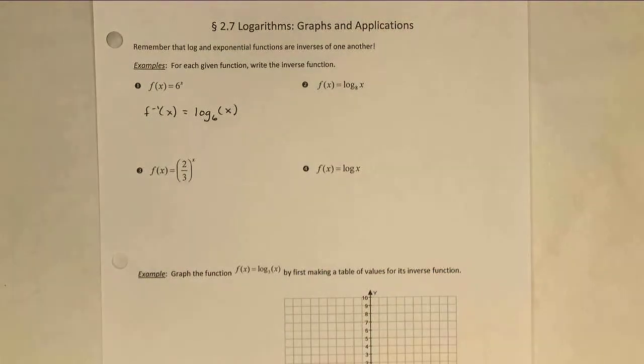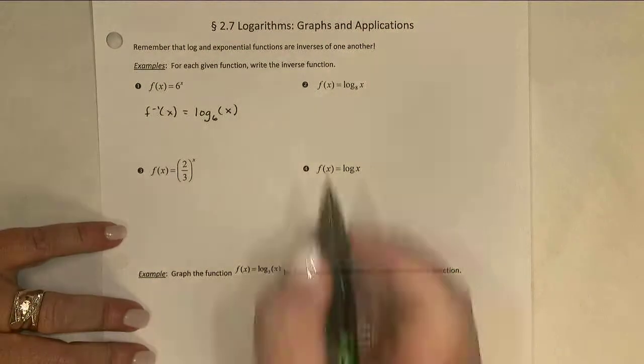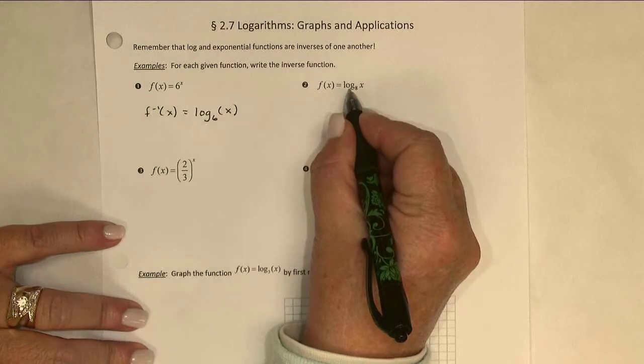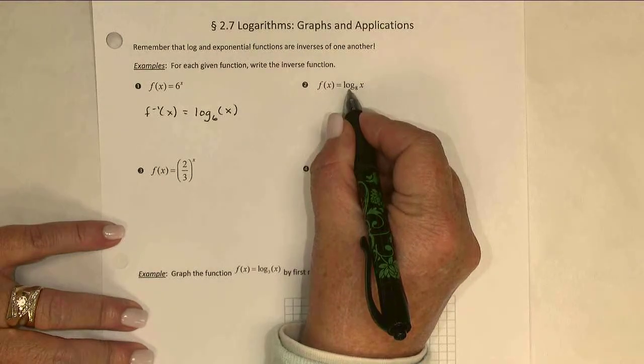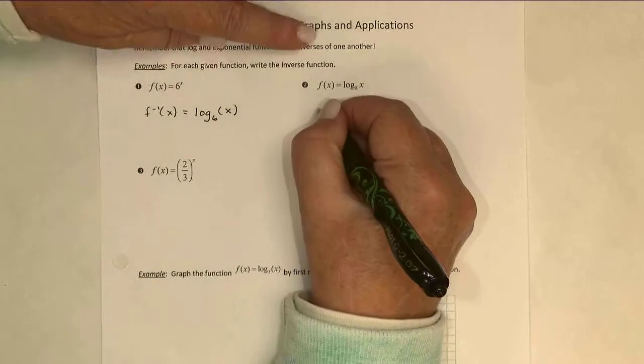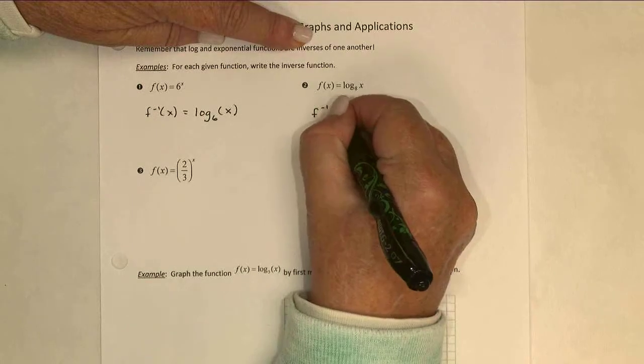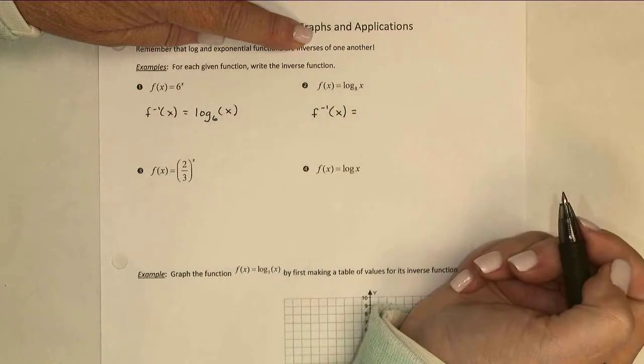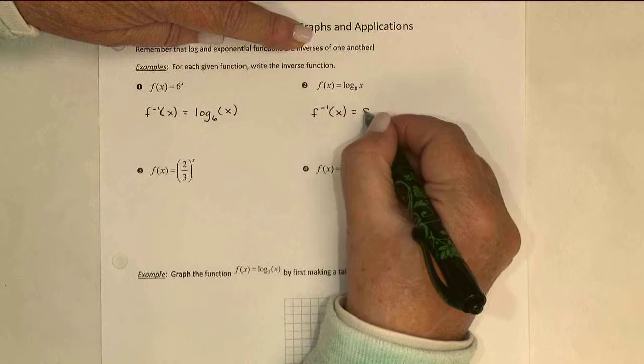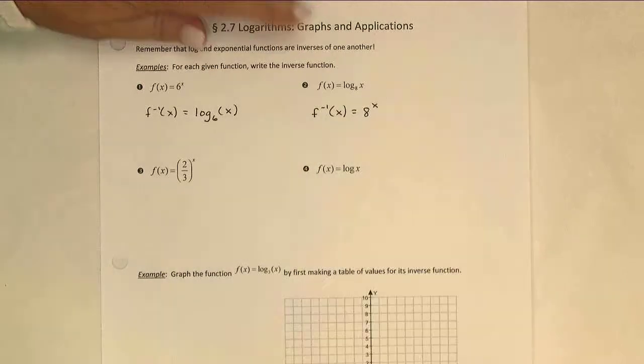And I'm good to go. Conversely, if I have a logarithm function, the inverse is an exponential. So f inverse of x is going to be exponential with a base of 8, 8 to the x power.